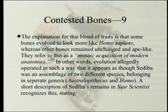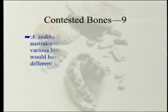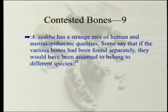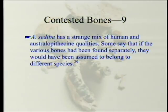For instance, the narrow upper rib cage of the female specimen is noted for its obvious resemblance to large-bodied apes, whereas the lower rib cage is described as human-like, indicating a rather unsuspected mosaic anatomy. The explanation is that some bones evolved to look more like Homo sapiens while other bones remained unchanged and ape-like — they refer to this as 'mosaic acquisition of modern anatomies.' In other words, evolution allegedly operated in such a way that sediba appeared as an assemblage of two different species belonging to separate genera: Australopithecus and Homo. New Scientist recognizes this, stating: 'A. sediba has a strange mix of human and Australopithecine qualities. Some say that if the various bones had been found separately, they would have been assumed to belong to different species.'